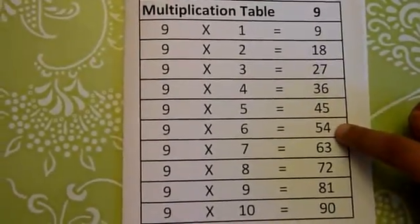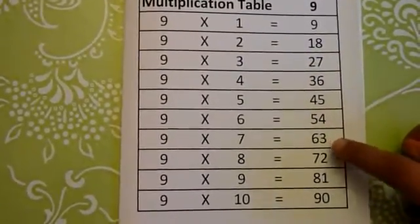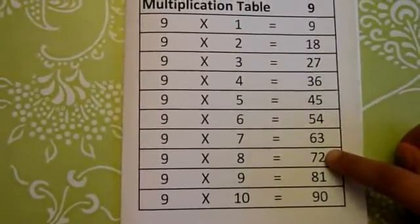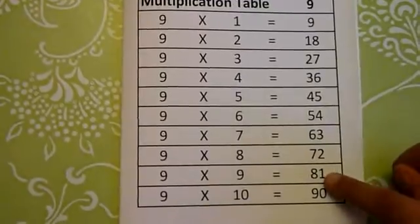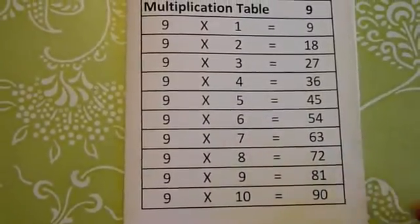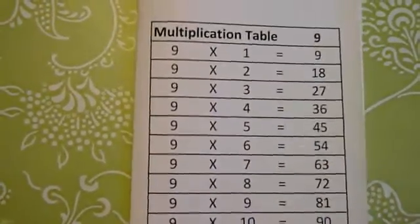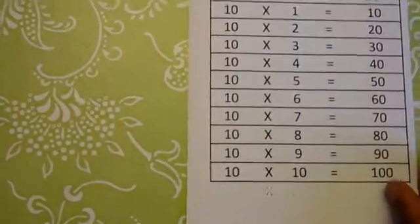9 6s are 54, 9 7s are 63, 9 8s are 72, 9 9s are 81, 9 10s are 90. And last we're going to go on to multiplication table 10.